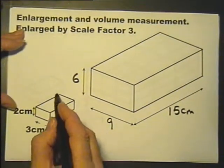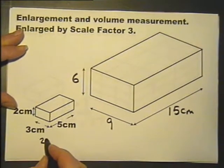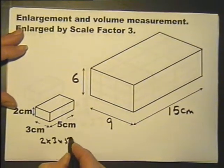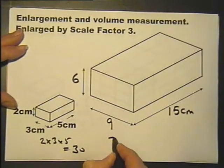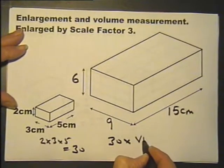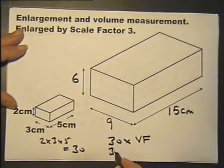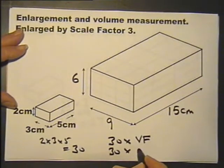Or we could just work out the volume of this: 2 times 3 times 5 which is 30, and then multiply that by the volume factor of 27.